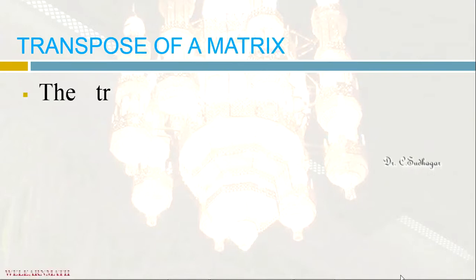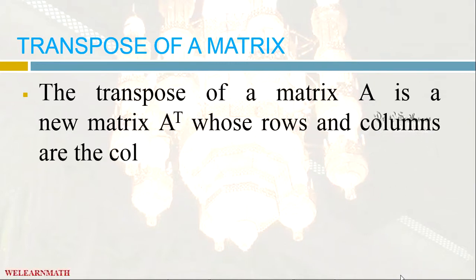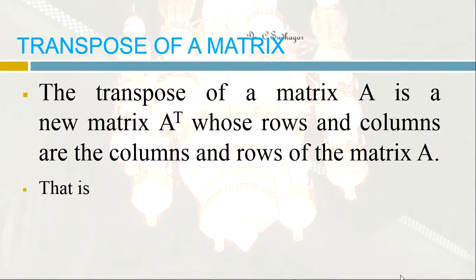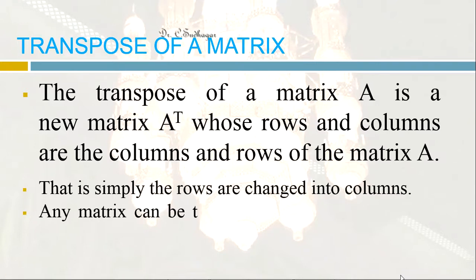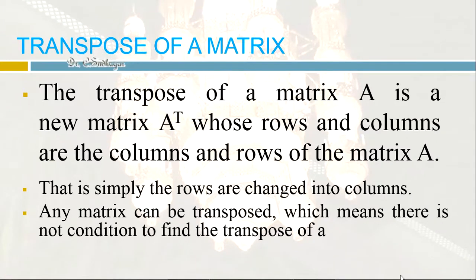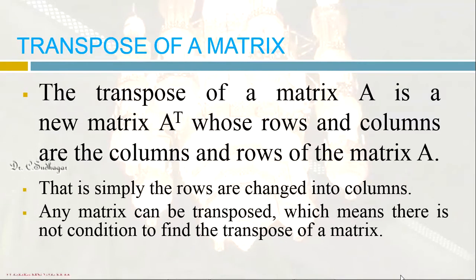Transpose of a matrix is a very simple concept. The transpose of a matrix A is a new matrix denoted by A superscript T, whose rows and columns are the columns and rows of matrix A. Simply put, just take matrix A and change the columns into rows. Any matrix can be transposed without any conditions — it can be a square matrix, rectangular matrix, column matrix, or row matrix. There is no condition to find the transpose of a matrix.